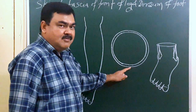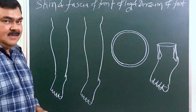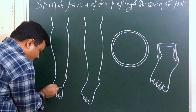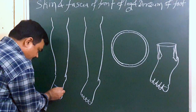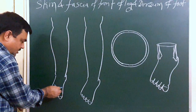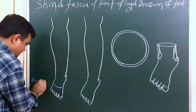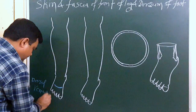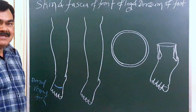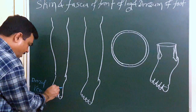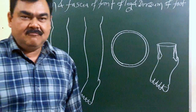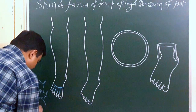After removing the skin, we will discuss about the structures present in the superficial fascia. An important structure present in the superficial fascia is a cutaneous vein — that is the dorsal venous arch. In this diagram, you can see this is the dorsal venous arch. This dorsal venous arch receives tributaries — one, two, three, four — these are four metatarsal veins. So this dorsal venous arch receives four metatarsal veins.